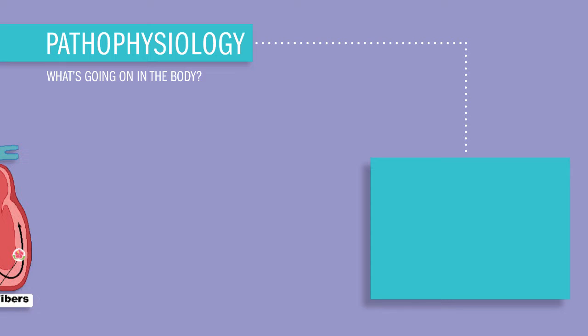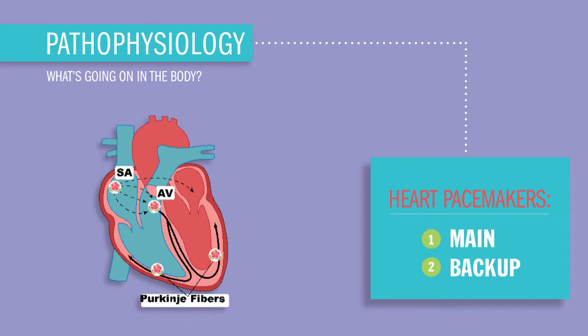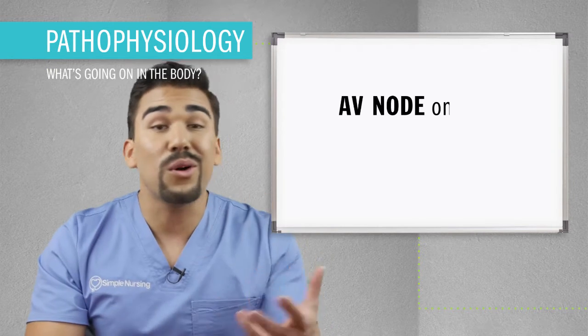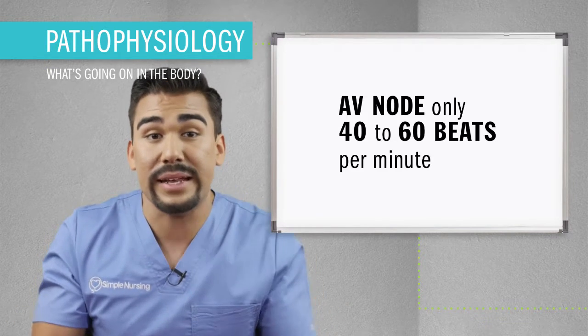So what's really going on in the body? The heart has one main pacemaker and two backup pacemakers. In this case, something has happened to the SA node — it has stopped working effectively — so the AV node, our backup pacemaker, our plan B, has taken over as a protective measure. But the AV node only conducts at 40 to 60 beats per minute.